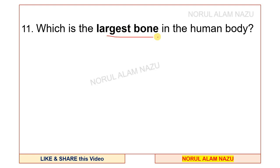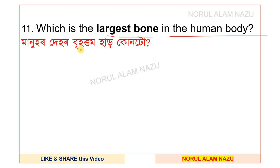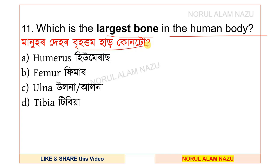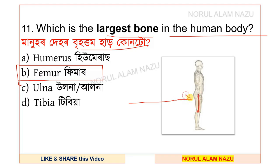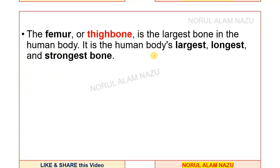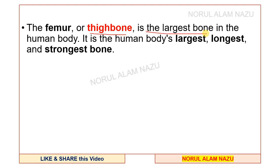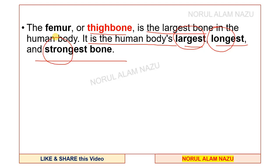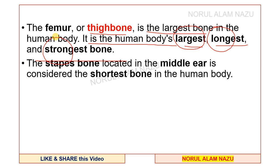Question 11: which is the largest bone in the human body? The options are humerus, femur, ulna, and tibia. The answer is femur — the thigh bone. It is the human body's largest, longest, and strongest bone. The stapes bone, located in the middle ear, is considered the shortest bone in the human body.